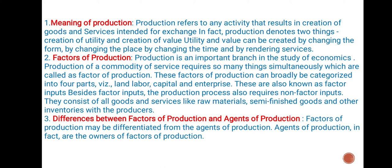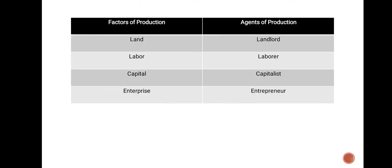Differences between factors of production and agents of production: Factors of production may be differentiated from the agents of production. Agents of production are the owners of factors of production. Factors of production: land, labor, capital, enterprise. Agents of production: landlord, laborer, capitalist, entrepreneur.